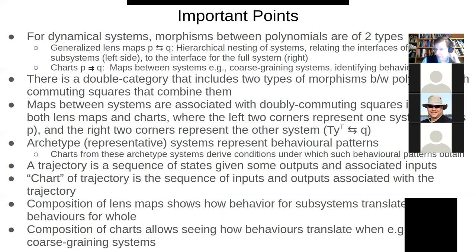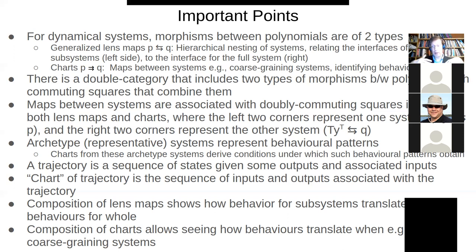There are commuting squares that relate them to one another. This isn't the first time we've mentioned such a construct — I recall hearing about it when talking about a category where functors are objects and morphisms are natural transformations, because we have horizontal and vertical composition of natural transformations. A similar construct appears here, but in this double category it relates to dynamical systems. David introduces the fact that maps between systems are associated with these commuting squares.